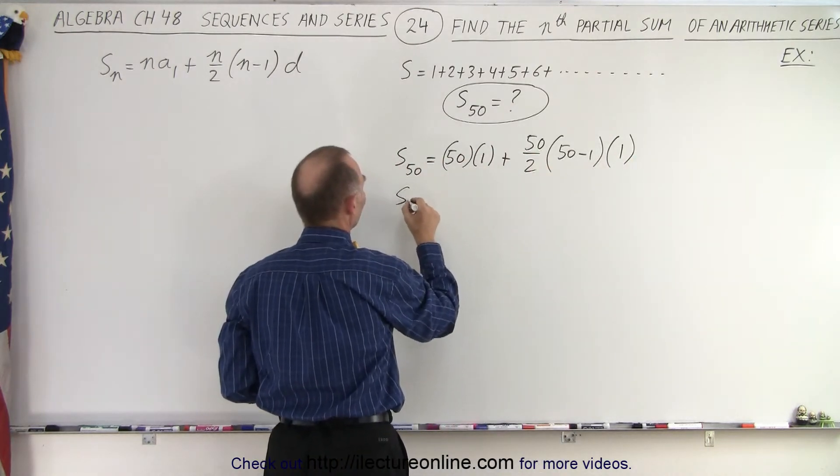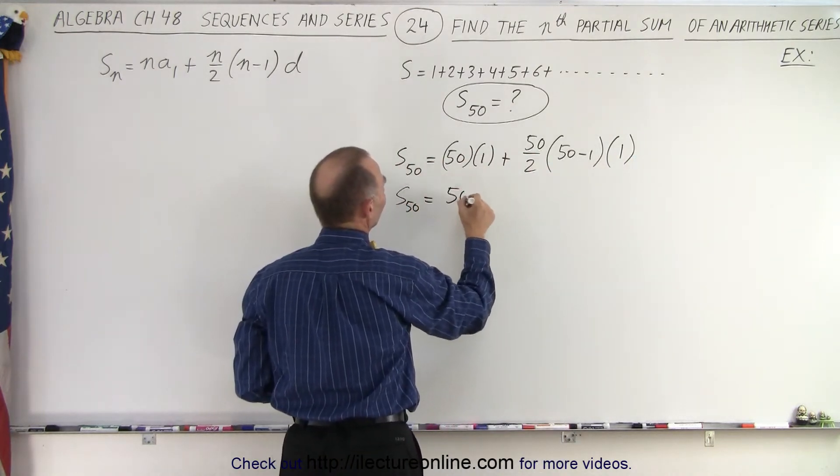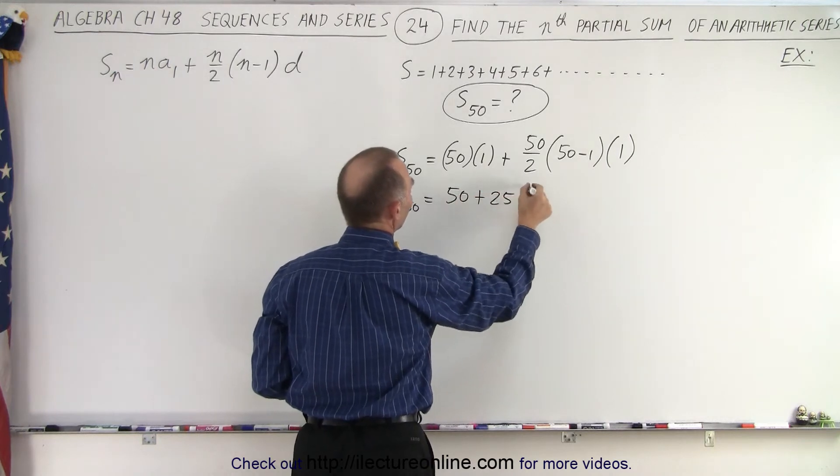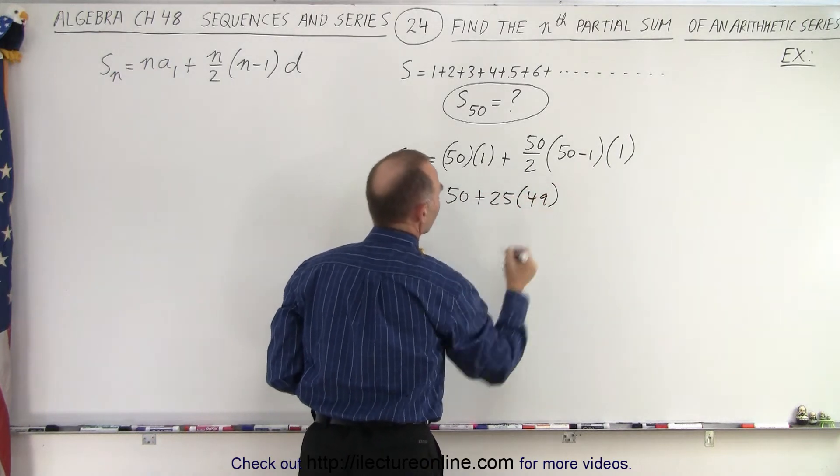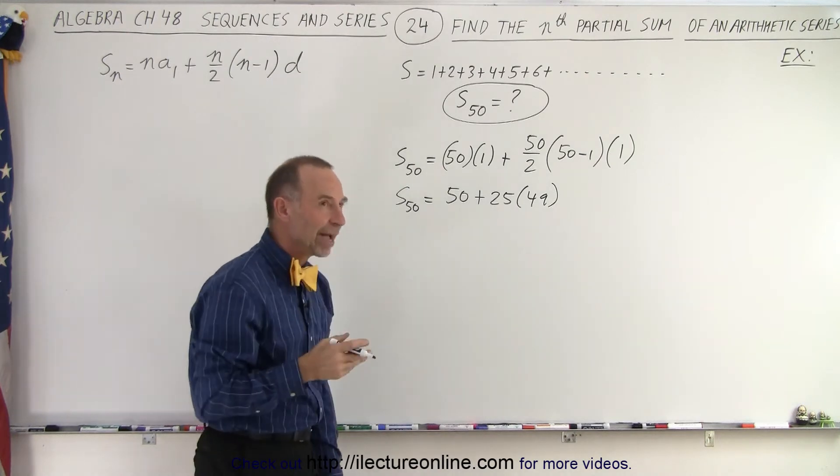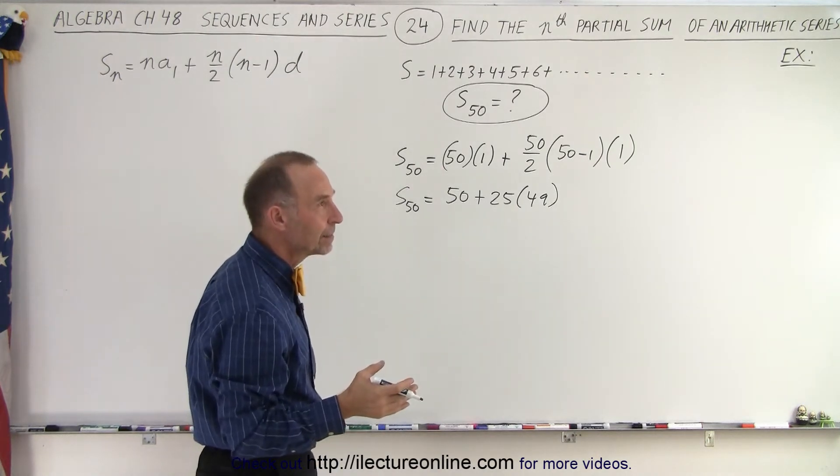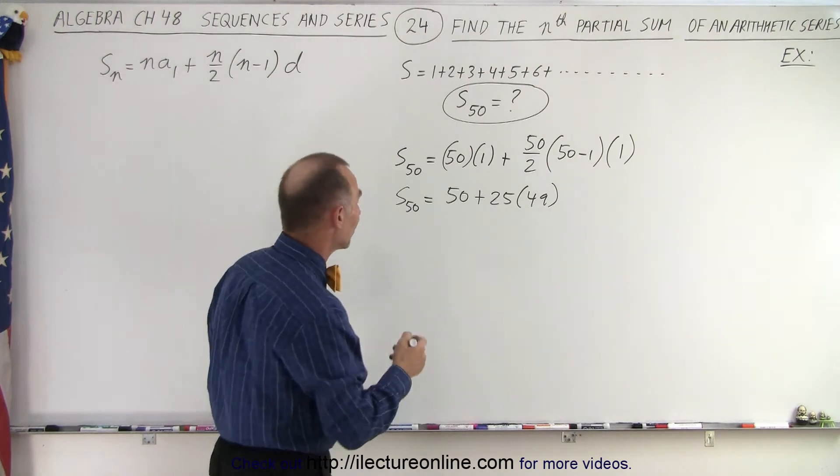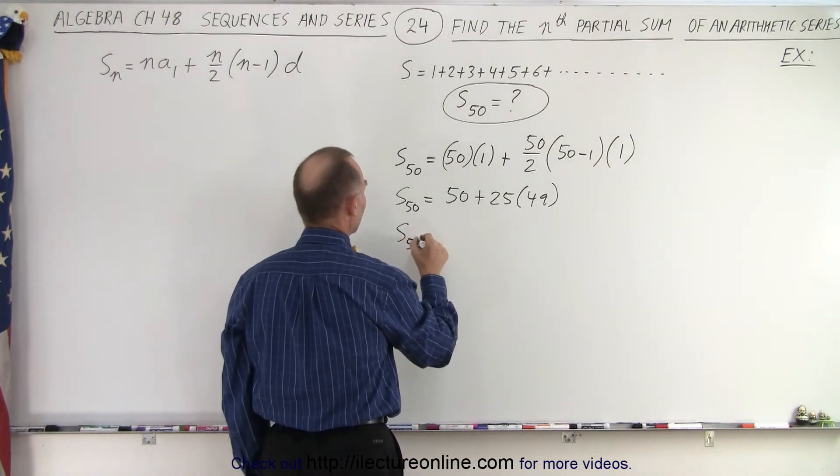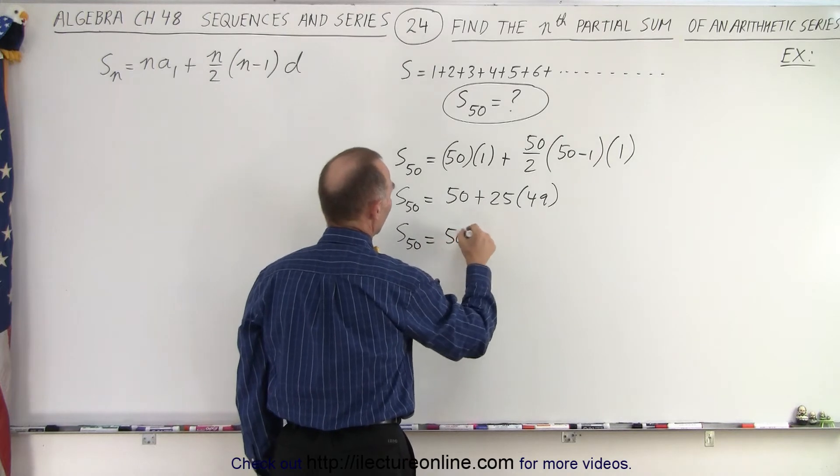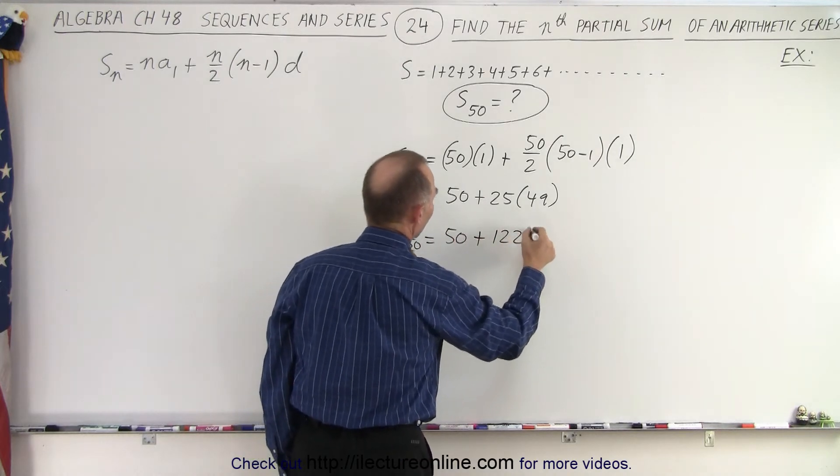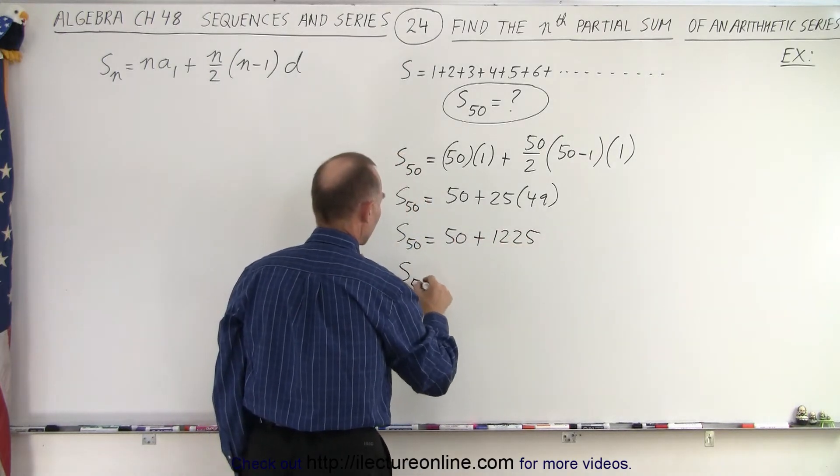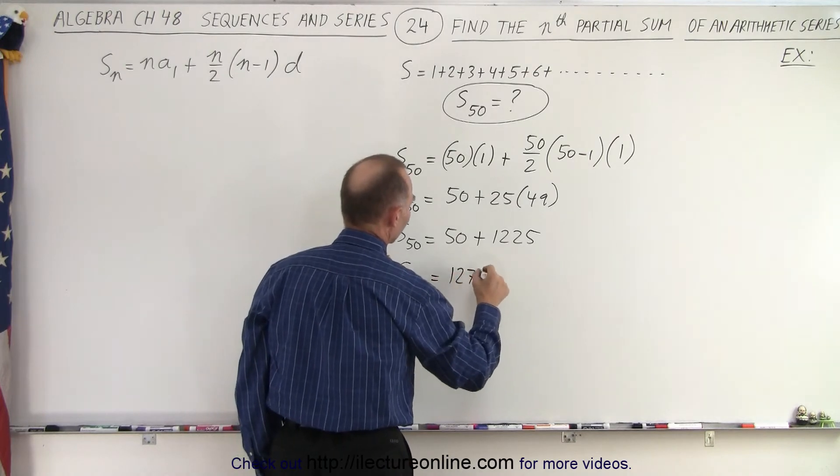So S sub 50 is equal to 50 plus 25 times 49. Alright, well, 25 times 50 would be 1,250 minus 25, that would be 1,225. So S sub 50 is equal to 50 plus 1,225. So S sub 50 is equal to 1,275.